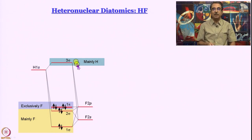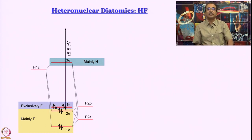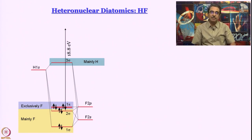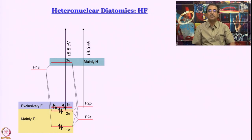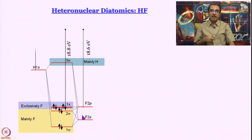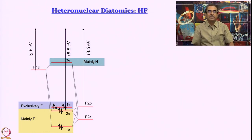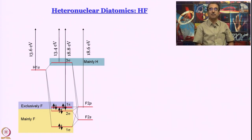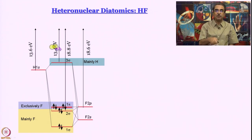The 3sigma anti-bonding orbital resembles the hydrogen atom wave function very closely. I know this from ionization energies determined by photoelectron spectroscopy. It is established that for HF you have an ionization energy of about 18.8 electron volts, which is very close to the ionization energy for fluorine atom 2p. Energetically this diagram is correct. The ionization energy of hydrogen atom 1s is 13.6 electron volts, and we get another ionization energy for HF at 13.4 electron volts — very close values.